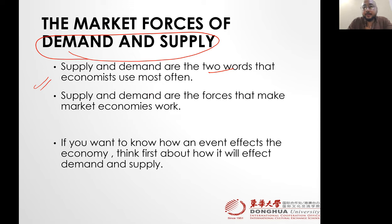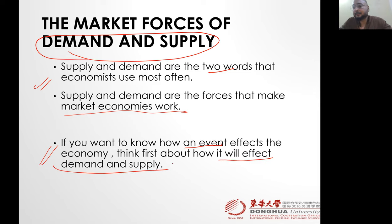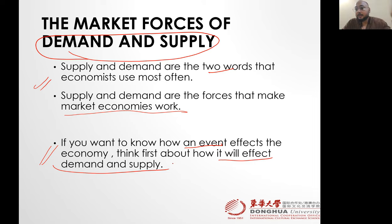Supply and demand are the forces that make market economies work. Whatever is going through in the world right now, you can think of it in terms of demand and supply and you'll get the answer. If you want to know how an event affects the economy, first think about how it will affect demand and supply. For example: a flood hits Pakistan — what's going to happen to the demand for food items? All the agricultural lands are filled with water, so prices will increase or decrease — we need to think in terms of demand and supply.